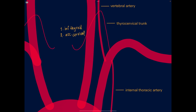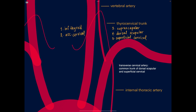The other branches of the thyrocervical trunk are the lateral branches, which are more variable. These include the suprascapular — usually the first branch off the thyrocervical trunk — the dorsal scapular, and the superficial cervical artery. Sometimes these are independent branches, but they could also share a common trunk that bifurcates, or two may share a trunk with one arising independently. The dorsal scapular artery frequently arises directly from the subclavian artery itself.